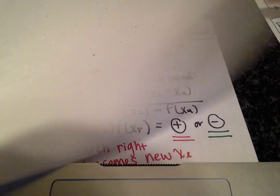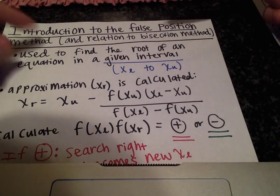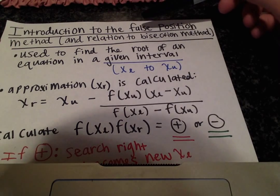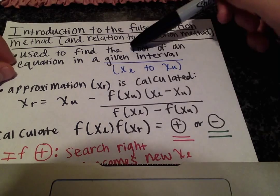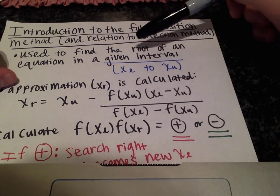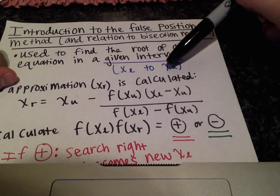So the bisection method and the false position method are similar in that they're used to find the roots of equations and this is done in a given interval x sub l to x sub u.